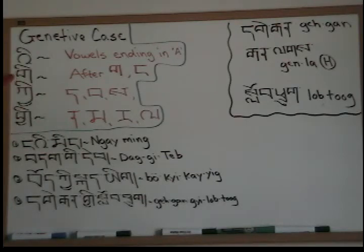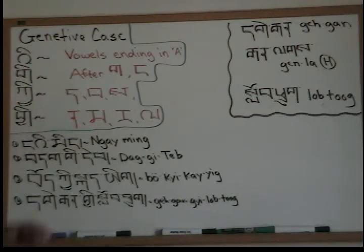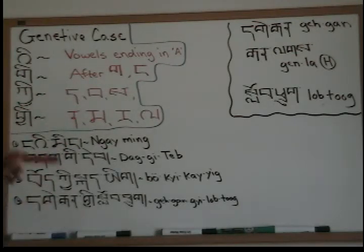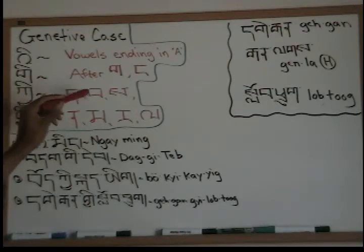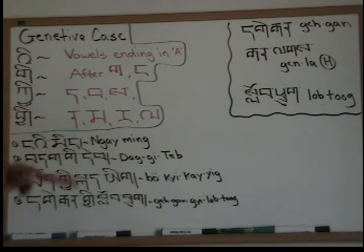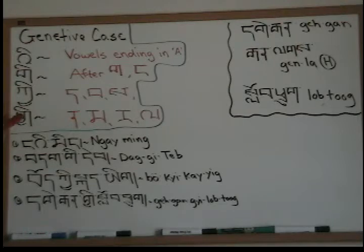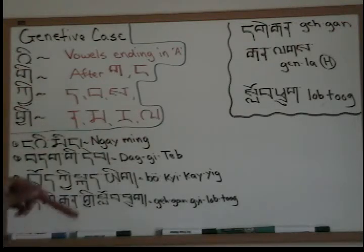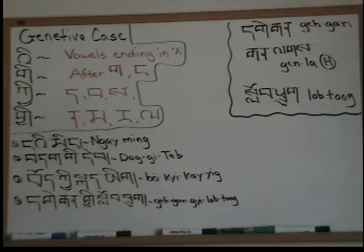The second one is the G, and the rule for that is a word ending with G or ngah will take the G. Now we have ki — any word ending with da, ba, or sa will take ki. And then we have gi — any word ending with na, ma, ra, la will take gi. So those are all of our genitive particles.